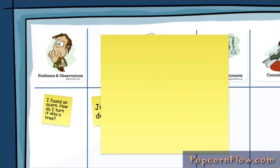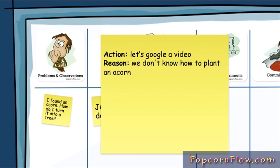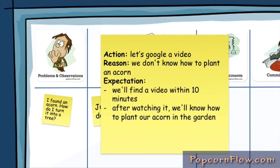So the action was, let's Google it. The reason, because we don't know how to plant an acorn. The expectation was we'll find a video within 10 minutes and after watching the video, we'll know how to plant our acorn in the garden.